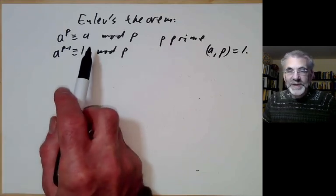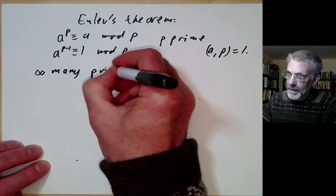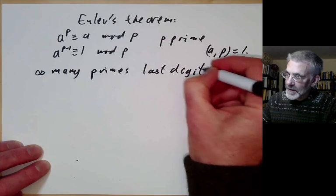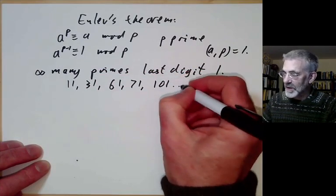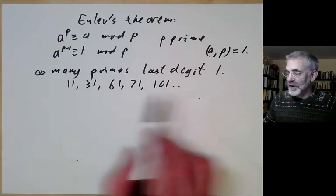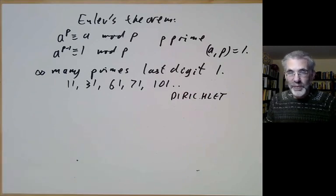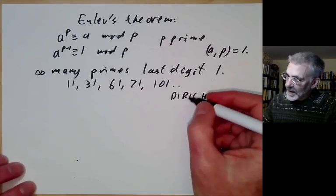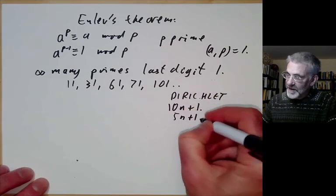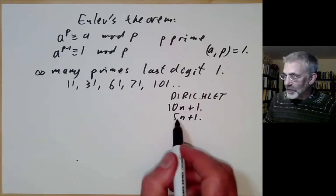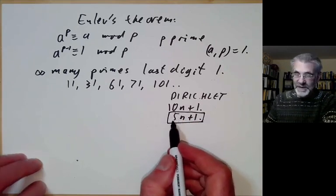Before giving Euler's generalisation, I'm going to give another application of Fermat's theorem: showing there are infinitely many primes with last digit equal to one. There are lots of primes like this — 11, 31, 61, 71, 101 and so on. This is a special case of Dirichlet's theorem. We do the special case of primes of the form 10n+1, and it's enough to show there are infinitely many primes of the form 5n+1, since any odd prime of form 5n+1 must be of form 10n+1.